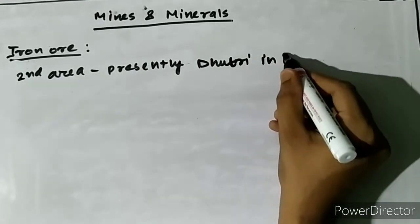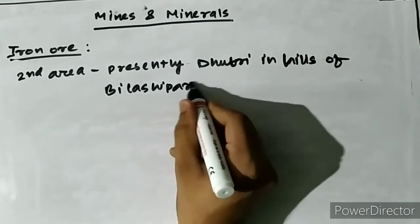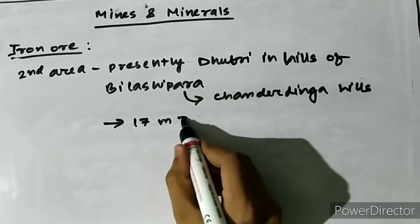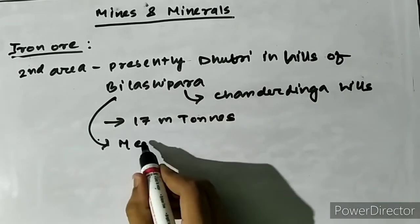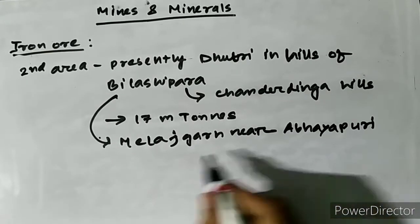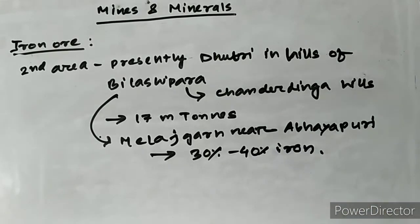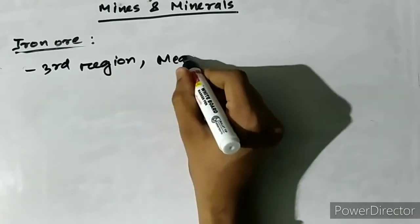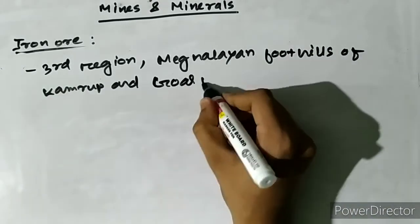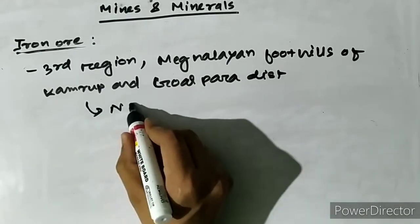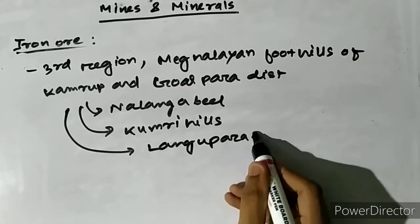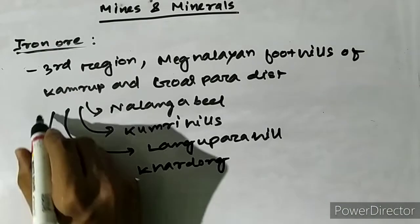Iron ore is found in the Dhubri hills of Bilasipara, especially at Chanderdinga hills, with an estimated reserve of about 17 million tons. At Melajgarh near Abhayapuri, the proportion of iron in the iron ore is about 30 to 40 percent. The third reserve is found in the Meghalayan foothills of Kamrup and Goalpara districts, at locations including Nalangabil, Kumri hills, Langupara hill, Kardong, and Arandanga Rauchapara area near Haim.